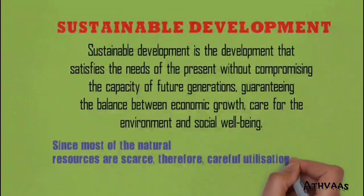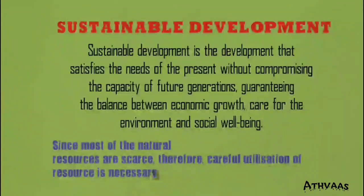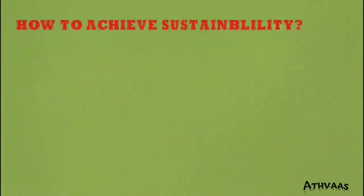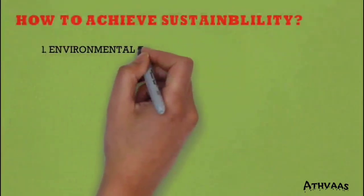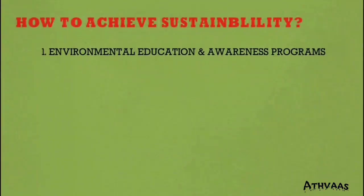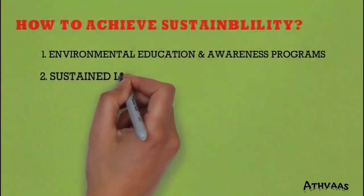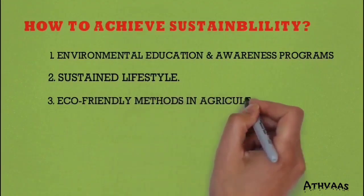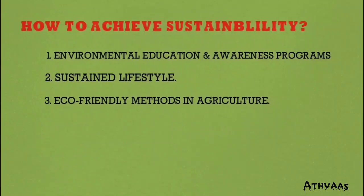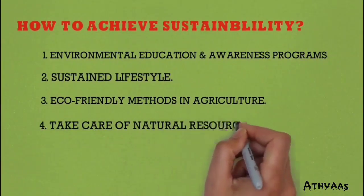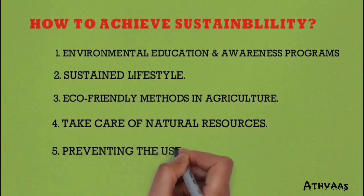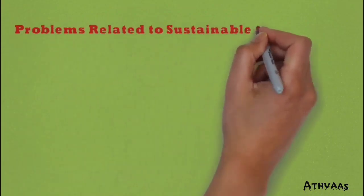Since most of the natural resources are in limited capacity, we have to utilize them carefully. To achieve sustainability, we have to take many steps: first, environmental education and awareness programs; second, a sustained lifestyle; third, eco-friendly methods in agriculture such as organic farming; and preventing the use of harmful chemicals.